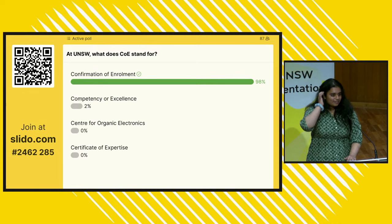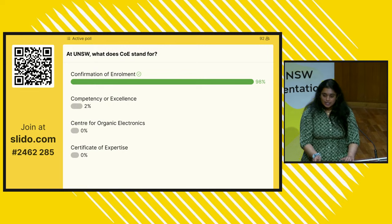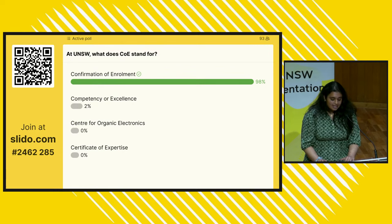The answer to the first question is Confirmation of Enrolment. Your COE is issued to you by the UNSW admissions and it is required in order to get your student visa, to verify that you are enrolled in a course at UNSW.